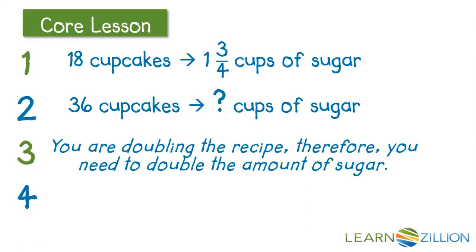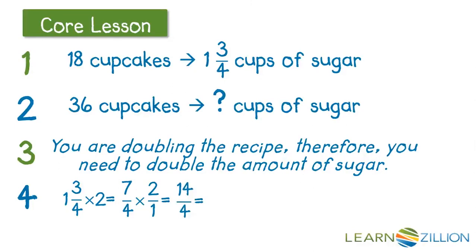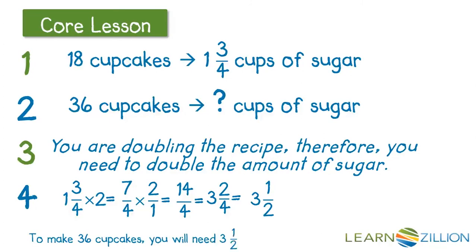We'll take 1 and 3/4 cups of sugar and multiply that by 2 to find out how much sugar we need. 1 and 3/4 times 2 is equivalent to 7/4 times 2/1, which is 14/4, which is equivalent to 3 and 2/4, or 3 and 1/2. So to make 36 cupcakes, Janie is going to need 3 and 1/2 cups of sugar.